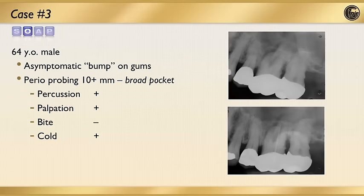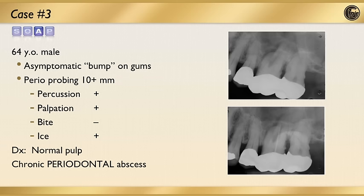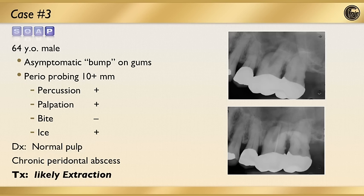Case three: a 64-year-old male, again with an asymptomatic bump on the gums. Periodontal probing reveals a broad 10 mm pocket — not an isolated narrow pocket but a wide pocket indicating periodontal bone loss. Patient is percussion positive, palpation positive on the root, bite negative, and cold positive. A positive cold response indicates vital, healthy nerve tissue in that tooth. Diagnosis: normal pulp with a periodontal abscess. Endodontic treatment is not indicated; the question becomes whether the tooth is saveable from a periodontal perspective.